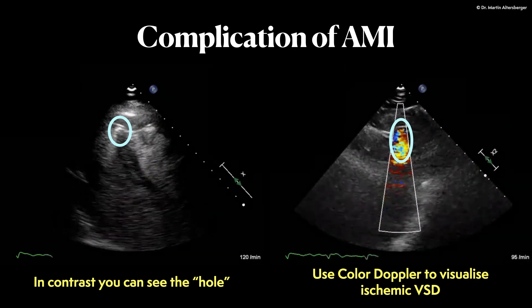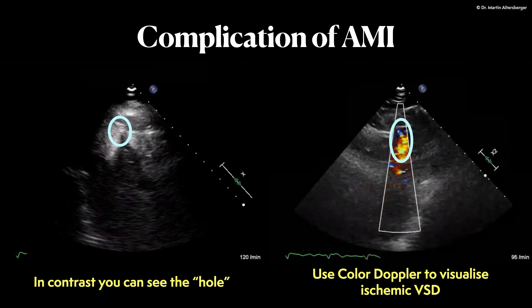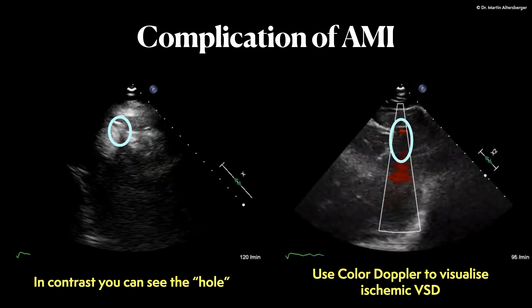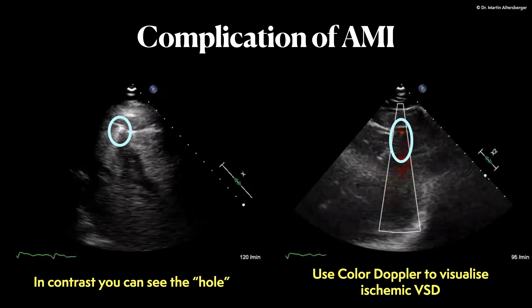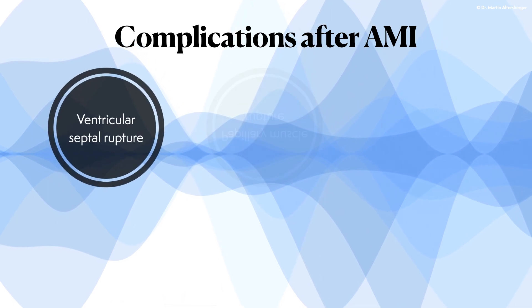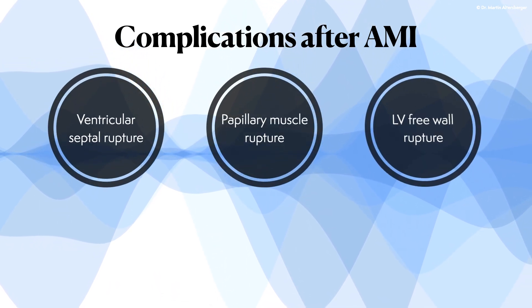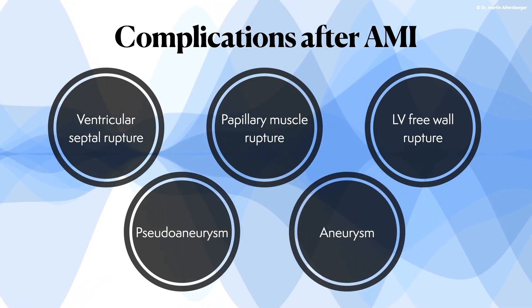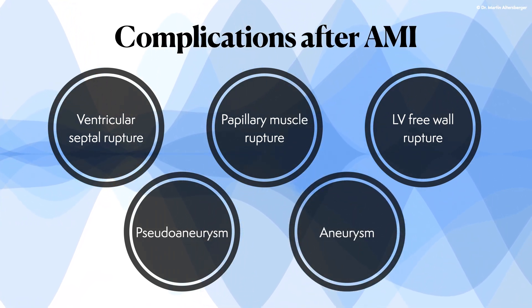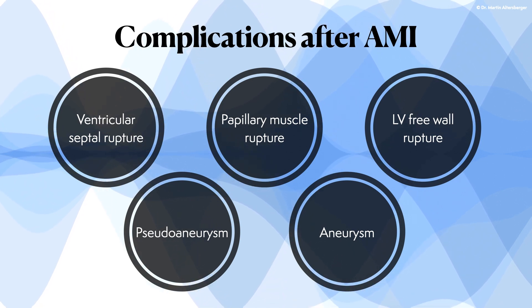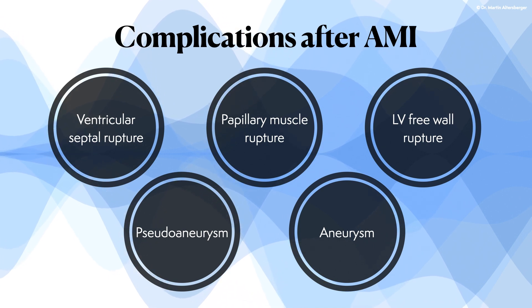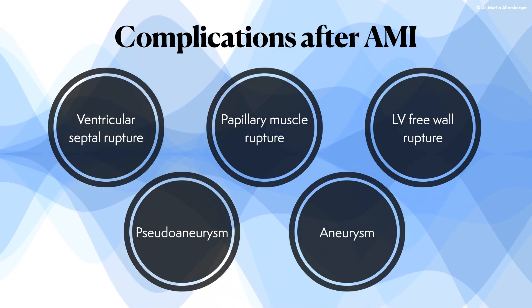Due to acute myocardial infarction — a large STEMI — ischemia caused a VSD to appear, representing a rupture of the myocardium. Several complications after acute myocardial infarction must be considered when performing echocardiography in acute patients: ventricular septal rupture, papillary muscle rupture, pseudo-aneurysm or aneurysm formation after infarction, and left ventricular free wall rupture.